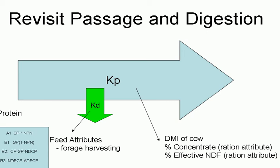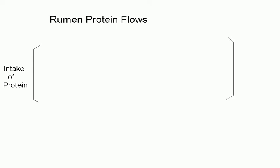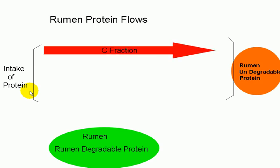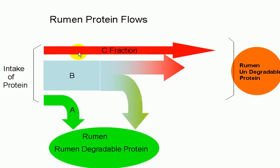In a similar manner, we also have protein fractions — from the soluble non-protein nitrogen all the way down to the acid detergent fiber protein. From a protein perspective, the cow consumes a certain amount of protein that either gets degraded in the rumen or bypasses as rumen-undegradable protein. We measure these with K-P divided by K-D over K-P — in other words, the rate of passage over the total rate at which losses occur from digestion or passage.